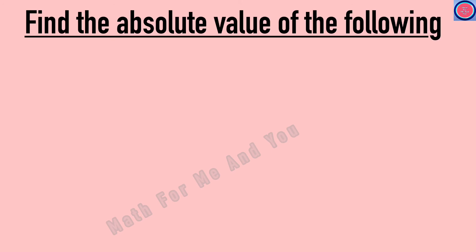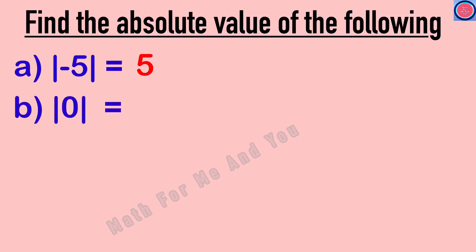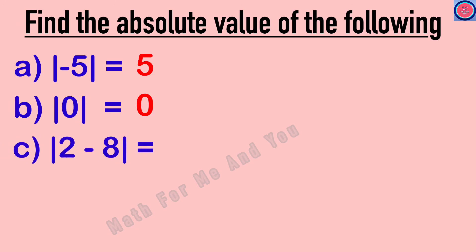Find the absolute value of the following. Absolute value of minus 5: the positive value of minus 5 is 5, so absolute value of minus 5 equals 5. Absolute value of 0 is equal to 0. Absolute value of 2 minus 8: first, 2 minus 8 equals minus 6, and absolute value of minus 6 is equal to 6.